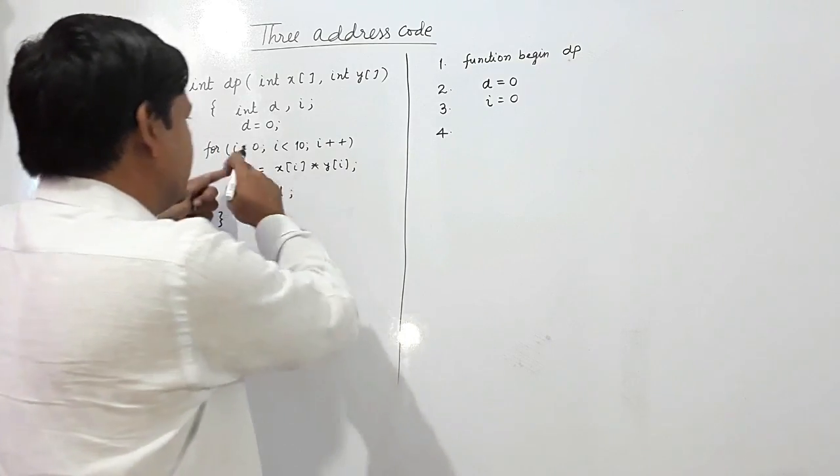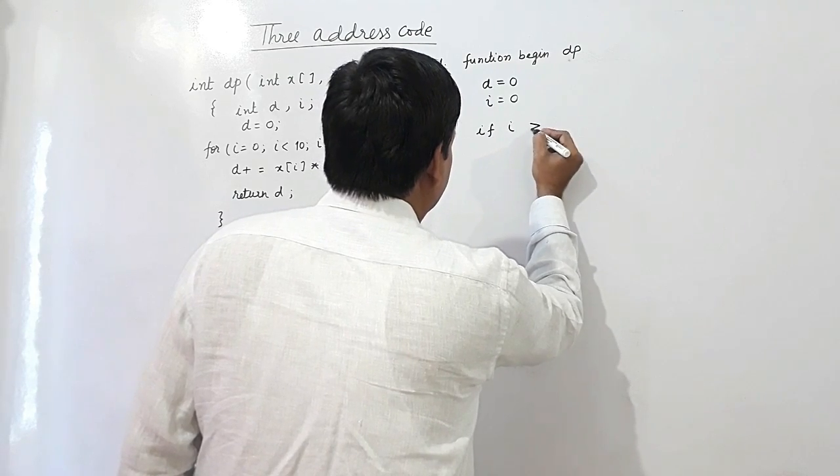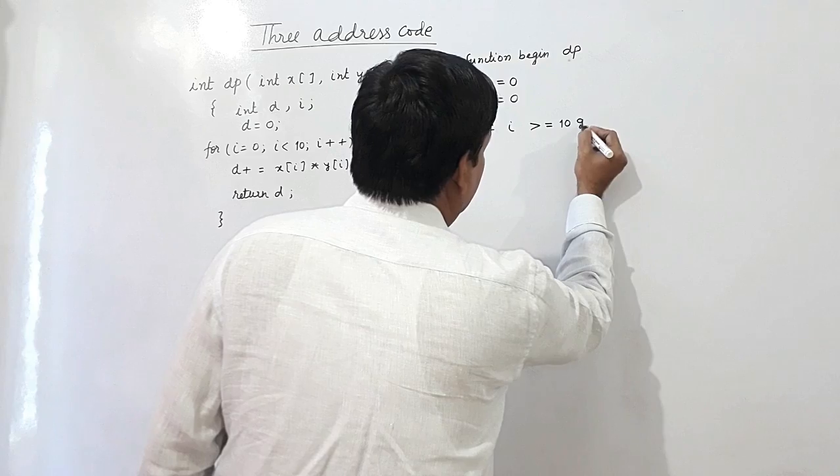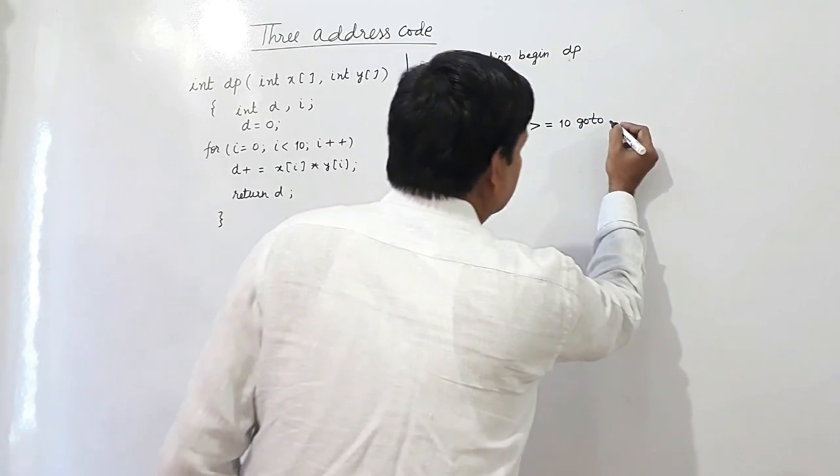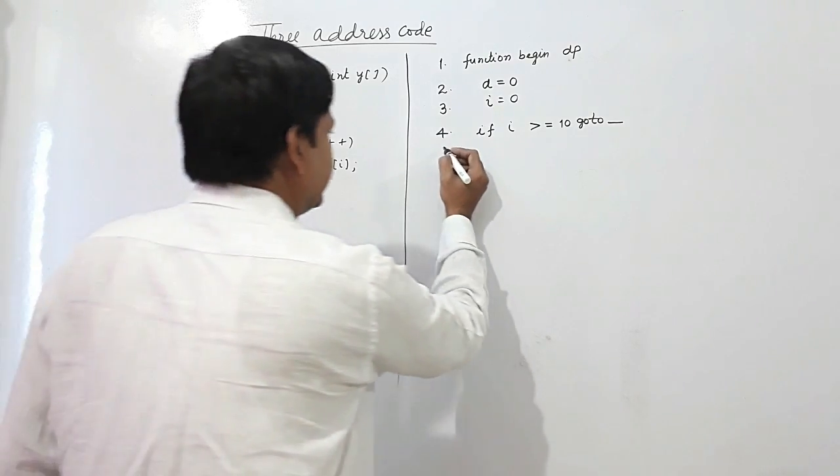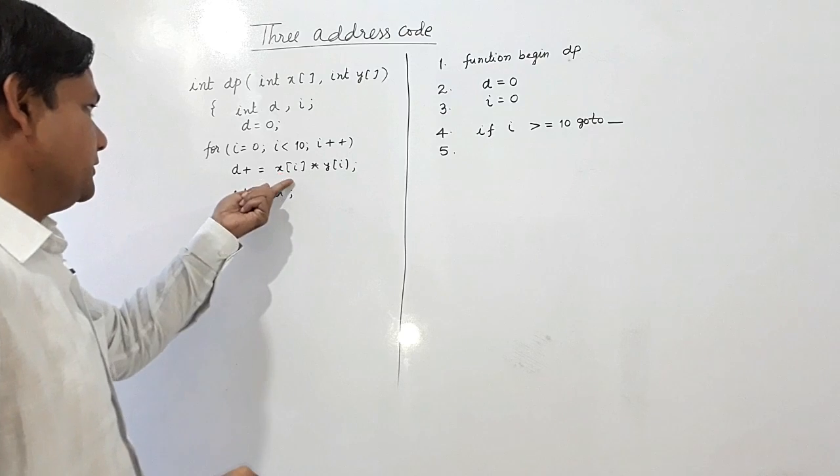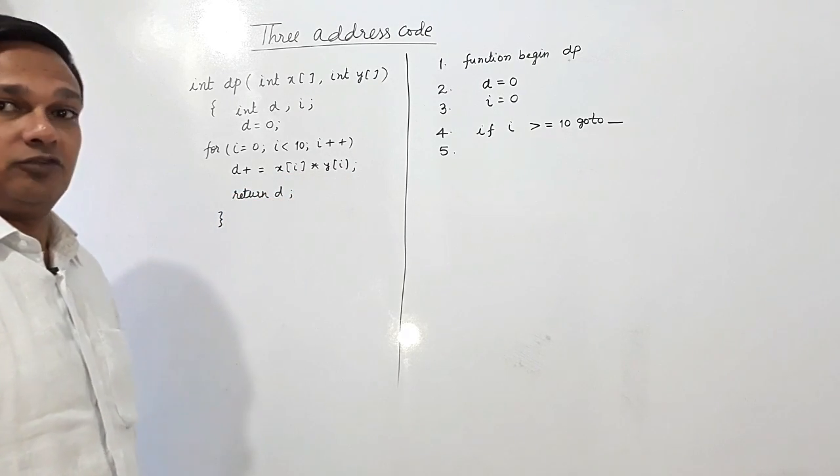This condition: if i is greater than or equal to 10, I have to jump somewhere. We shall see it. What is going to happen? We have to write the three address code for x[i] as well as for y[i].